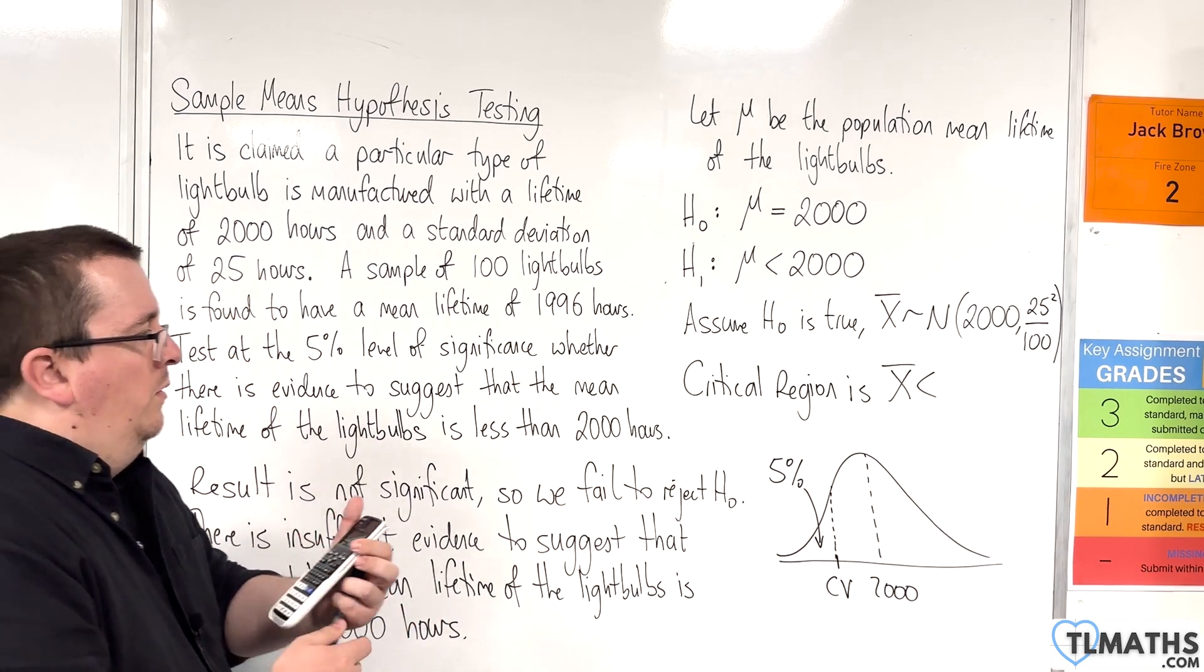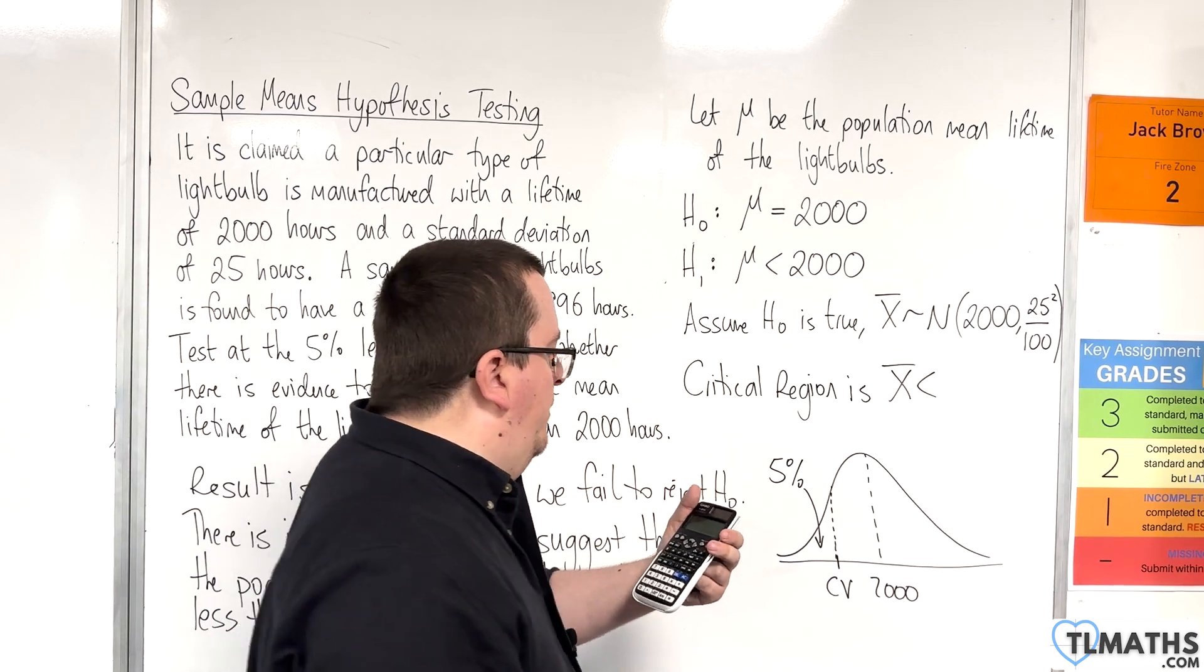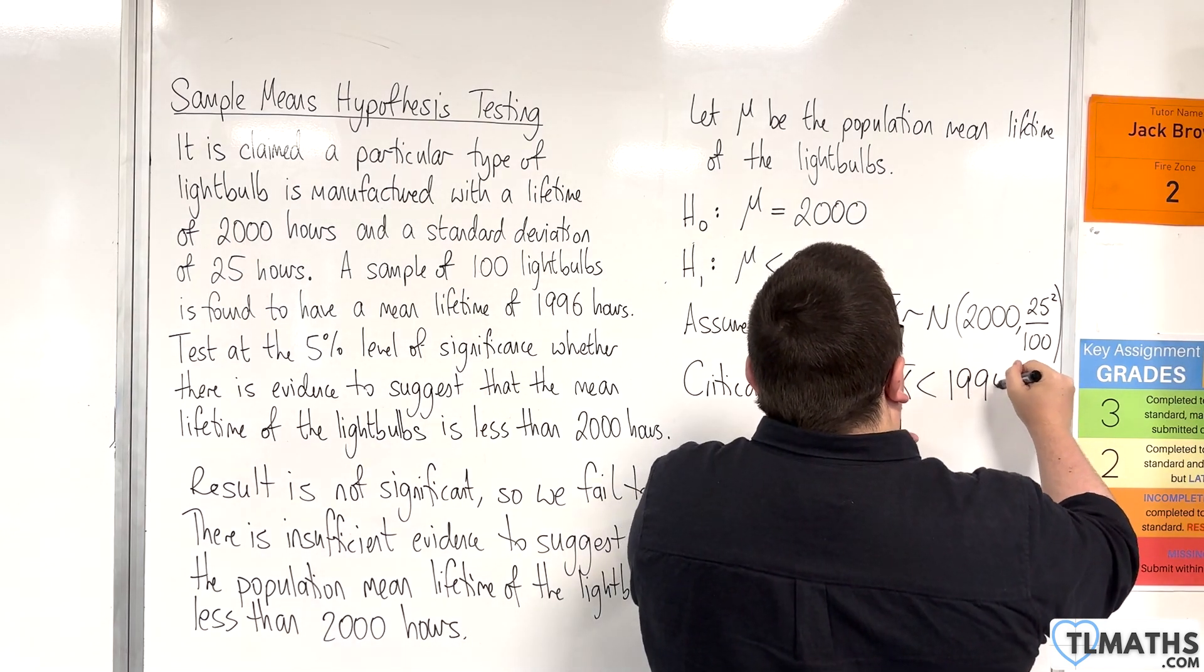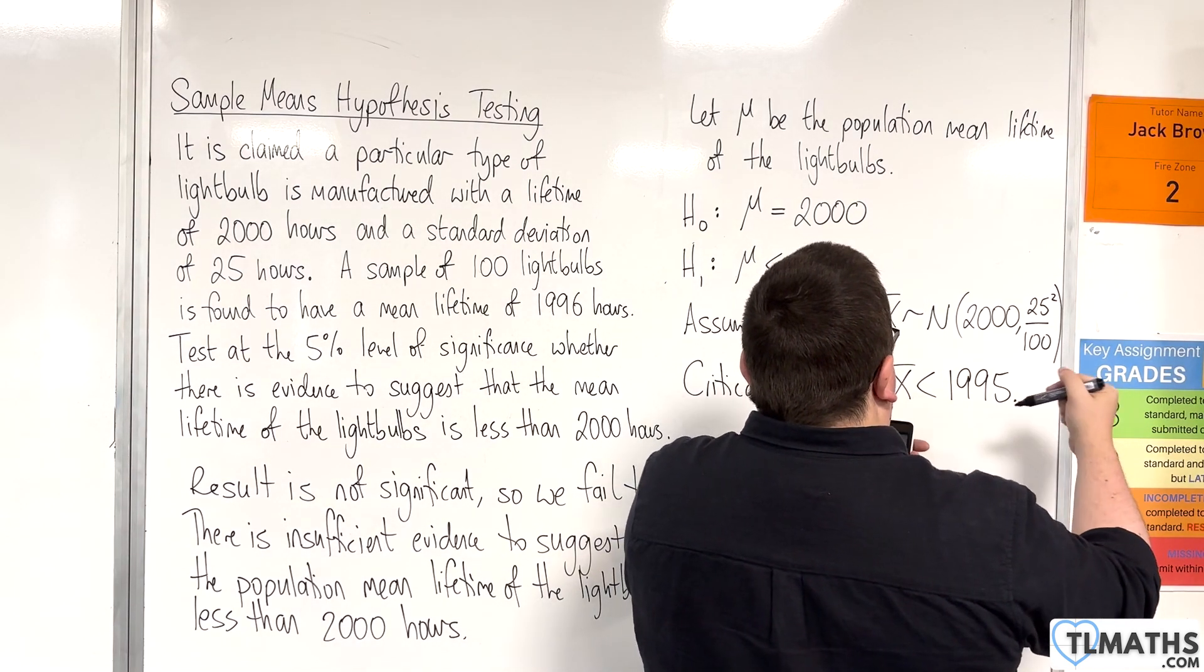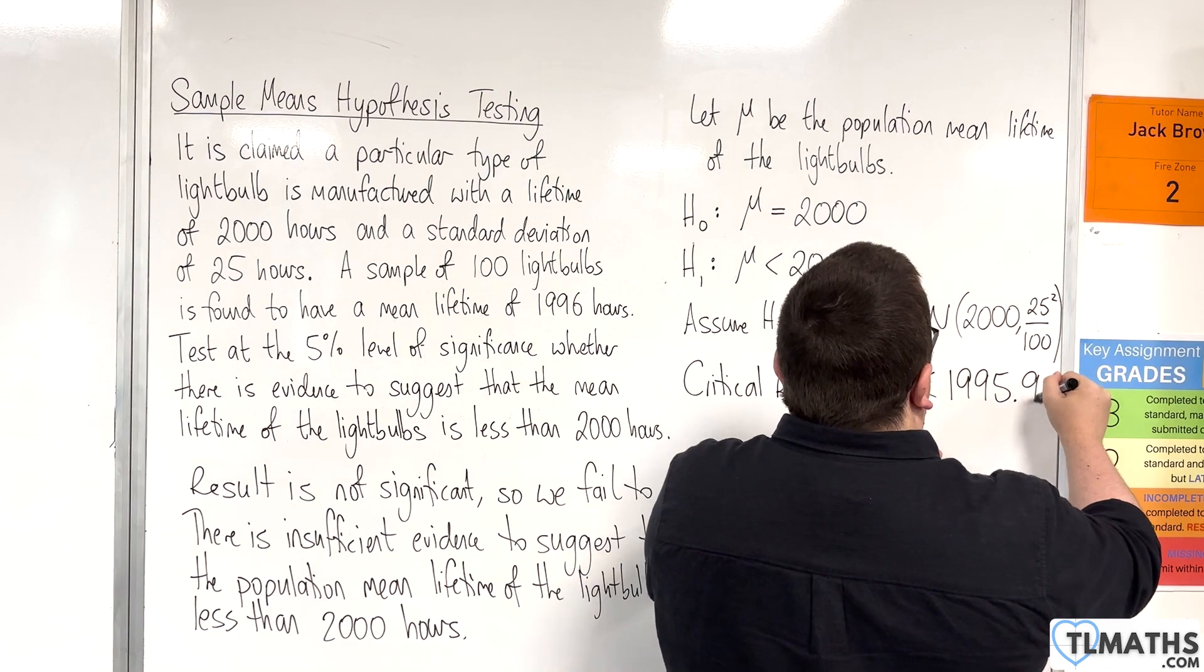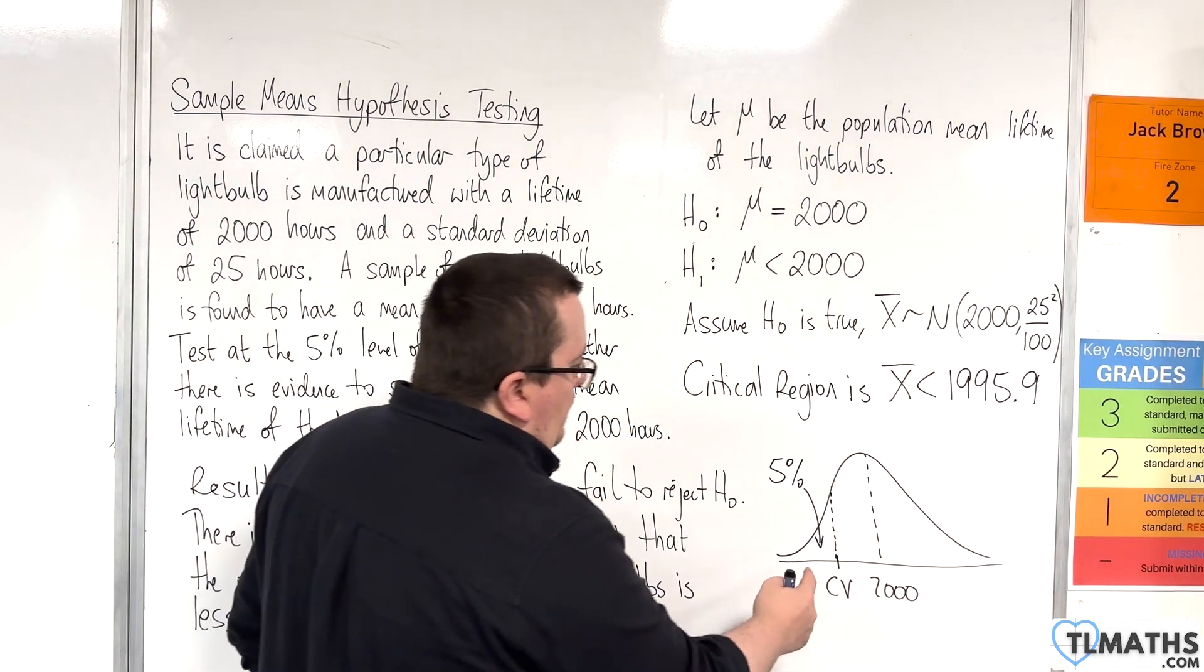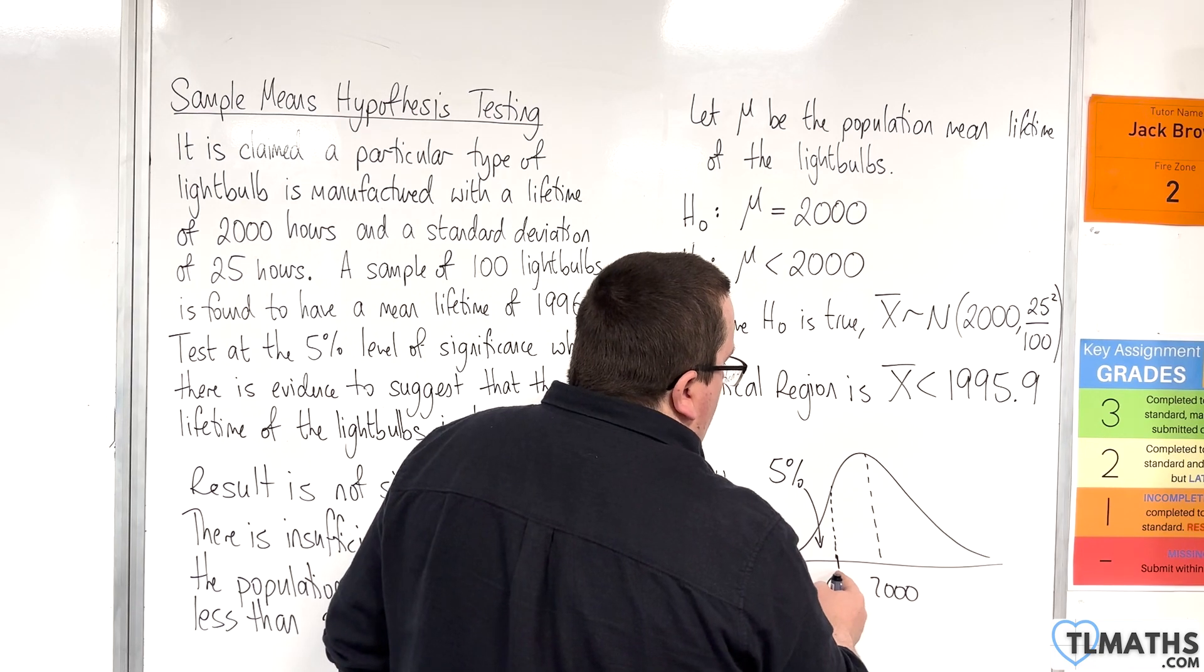So, the result I get is 1,995.887. So, let's say 1995.9. Okay. So, that's that value there, 1,995.9.